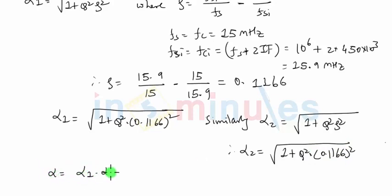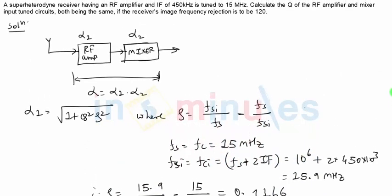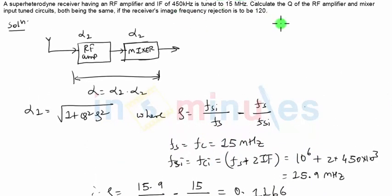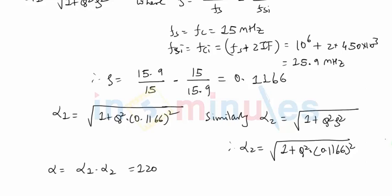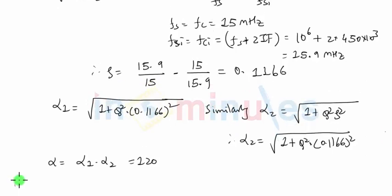Now as we mentioned earlier, overall alpha will be alpha 1 into alpha 2, and the overall alpha is given to be 120 in the question. The question says that the receiver must have the image frequency rejection of 120. So now all we have to do is put the values of alpha 1 first, which is under root 1 plus Q squared into 0.1166 squared.